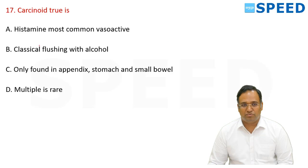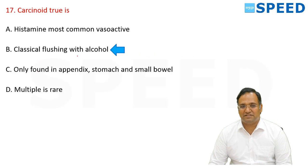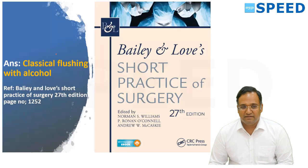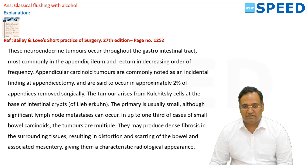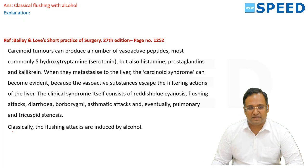Regarding carcinoid tumors — histamine is not the most common vasoactive substance; serotonin is the most common. The statement that carcinoids are only found in the appendix, stomach, and small bowel is wrong — they are found throughout the GI tract and also in the lungs. Multiple carcinoids are actually common, not rare. The correct statement is classical flushing with alcohol — flushing attacks are induced by alcohol, chemotherapy agents, biopsies, and angiography. Reference: Bailey and Love 27th edition, page 1252.